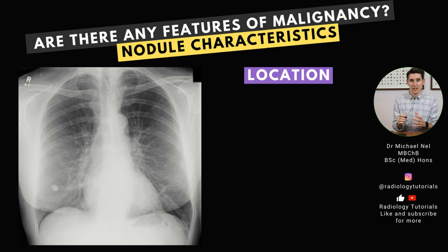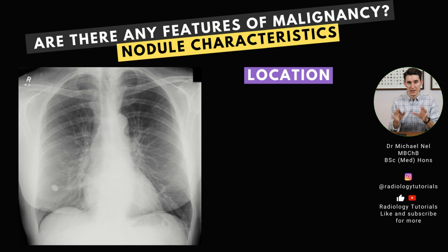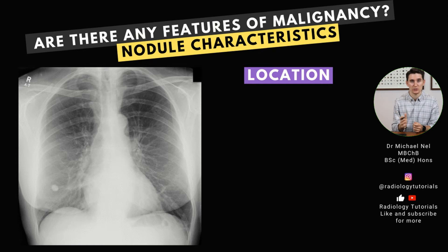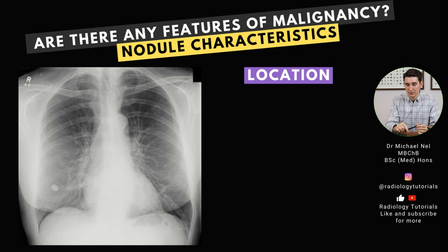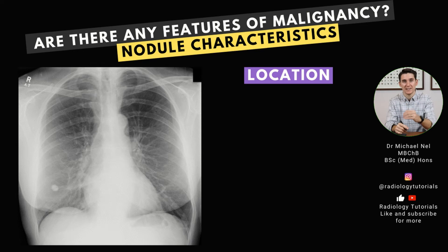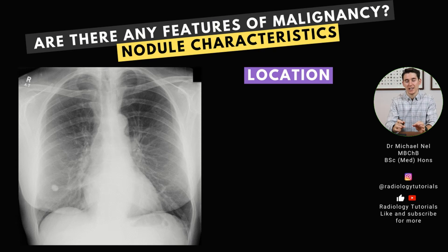Next is location. Benign lesions don't care where they fall in the lung — they are evenly spread through the upper, middle, and lower zones. Sometimes lesions close to the pleura or fissural lines are more likely benign because they may represent lymph nodes. Malignancy, on the other hand, has a predominance for the upper lobes. So your index of suspicion for a malignant lesion must be higher when you see a lesion in the upper lobes — that's not to say a lower lobe lesion is not a malignancy, it's just that the probabilities are higher in the upper lobe.